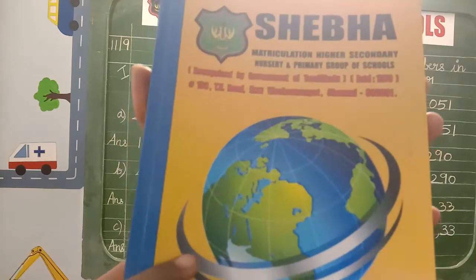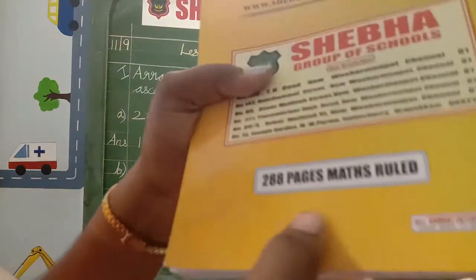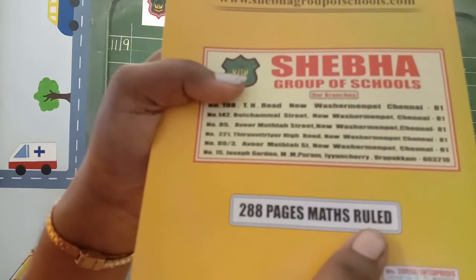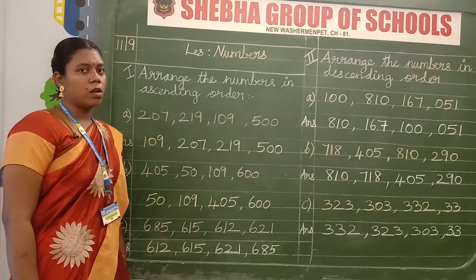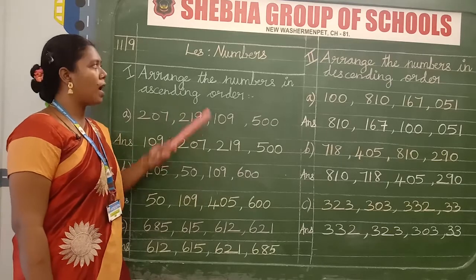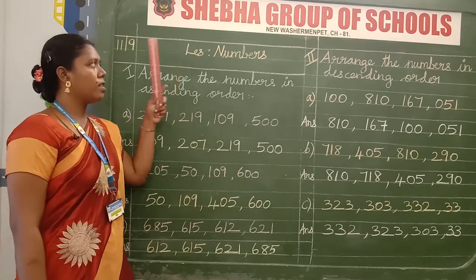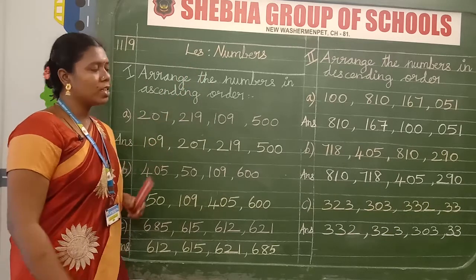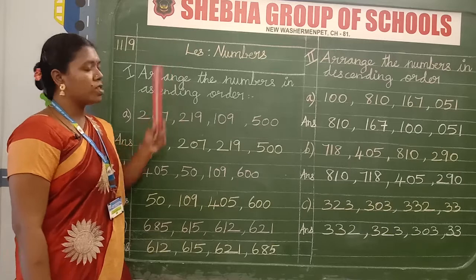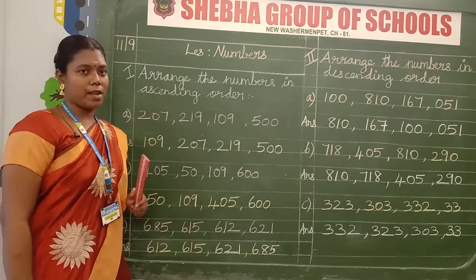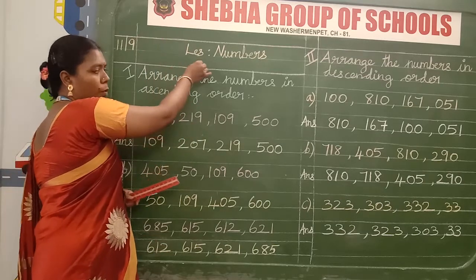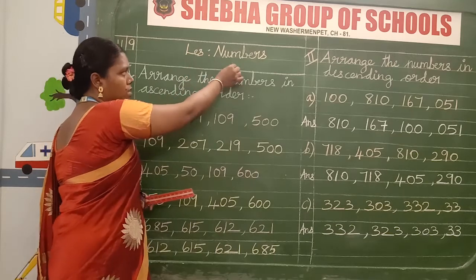Dear students, take this note — page number 288, math ruled note. Let's start to write the classwork. We already wrote the math classwork, and once again you can write this numbers lesson. Take a fresh page and put the line using a scale and pencil. Use these two lines to write the topic of the lessons. Lesson: Numbers.